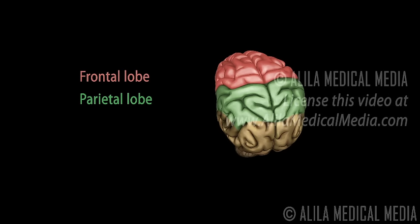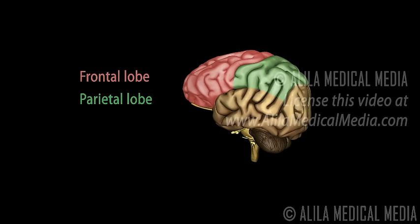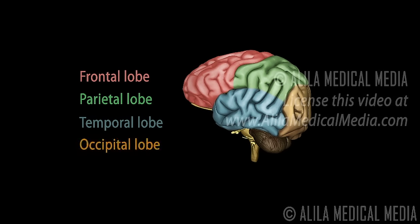The parietal lobe is mainly concerned with sensory functions of the somatosensory category, such as touch, stretch, movement, temperature, and pain. The temporal lobe is separated from the frontal and parietal lobes by the lateral sulcus, and is associated with hearing, learning, visual memory, and language. The occipital lobe is located at the rear of the cerebrum and is the visual processing center of the brain.